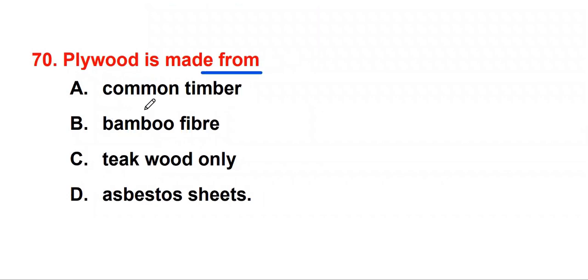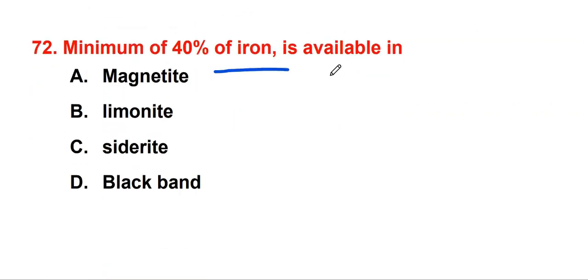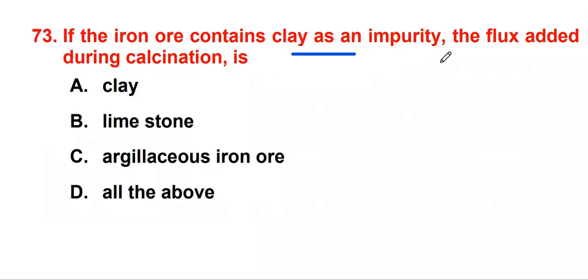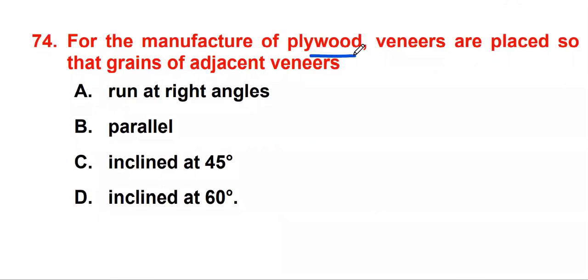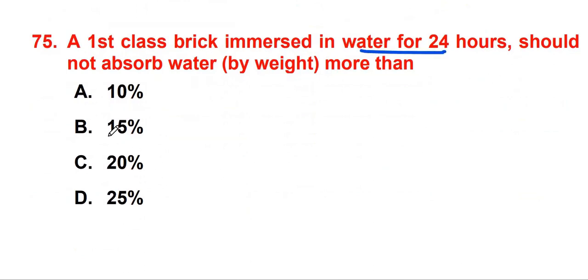Plywood is made from teak wood. Soundness test of cement determines quality of free lime. Minimum of 40% iron is available in blackband. If the iron ore contains clay as an impurity, the flux added during calcination is limestone. For the manufacture of plywood, veneers are placed so that grains of adjacent veneers run at right angles. Veneers are thin decorative coverings of fine wood. A first-class brick immersed in water for 24 hours should not absorb water by weight more than 20%.